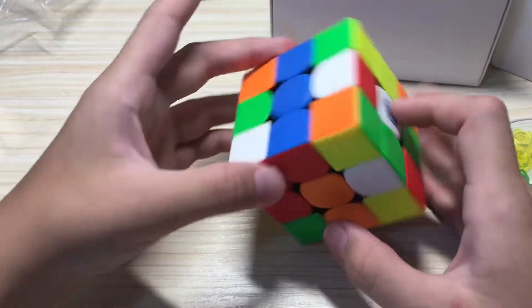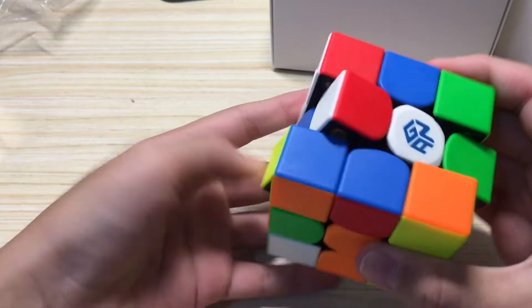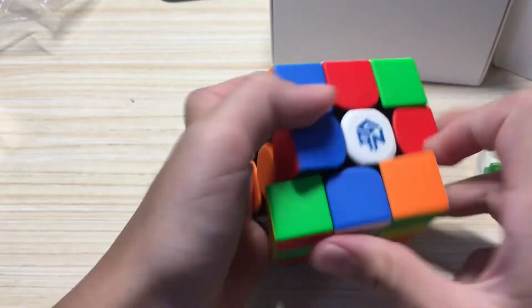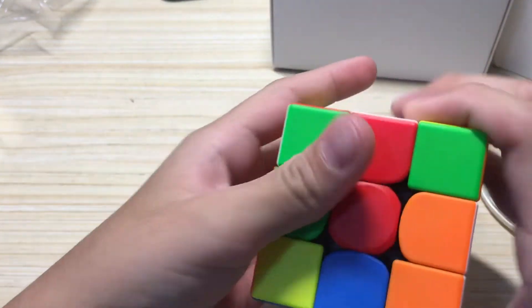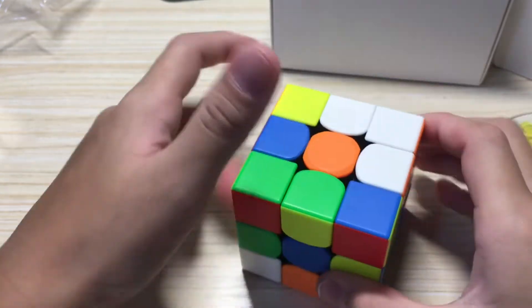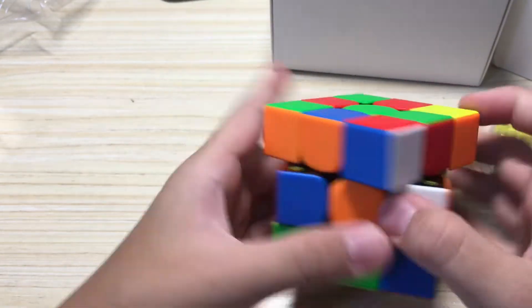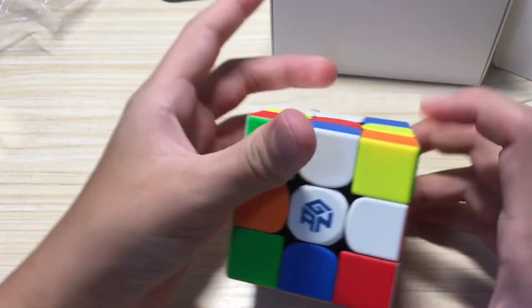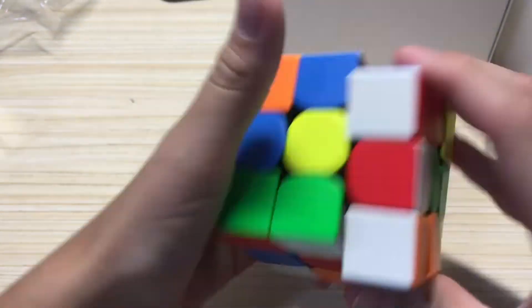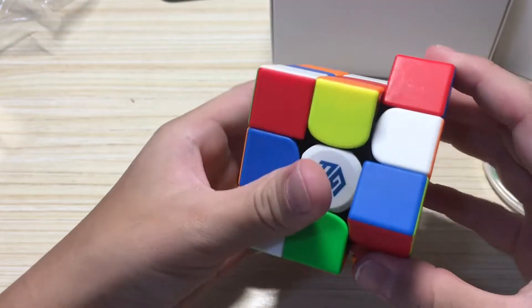Okay, so now it's scrambled up. This is how it should look like when it's scrambled up. And I also like it because it's stickerless. I like stickerless cubes.